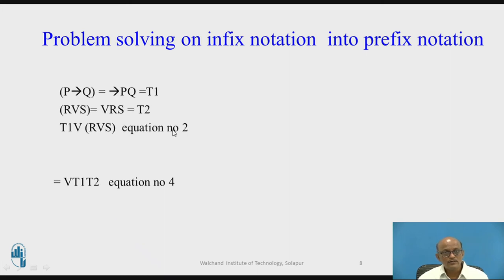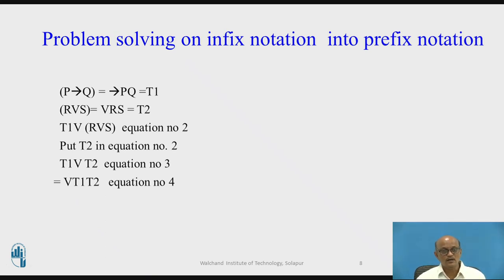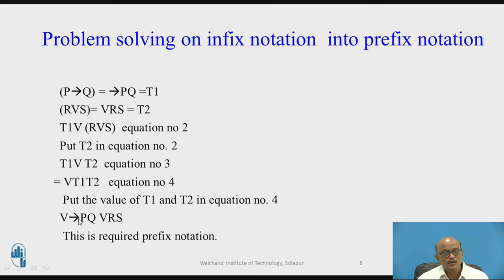Now T1 OR T2 will be converted into prefix, giving OR T1 T2 — equation number four. We substitute T1 and T2: T1 is conditional PQ, and T2 is OR RS. So the final prefix notation from the given infix notation is: OR (conditional PQ) (OR RS).